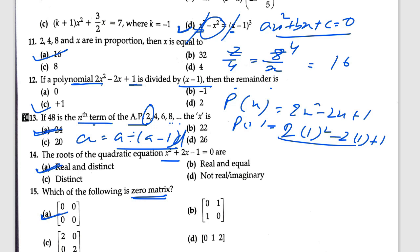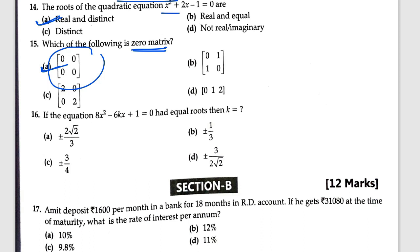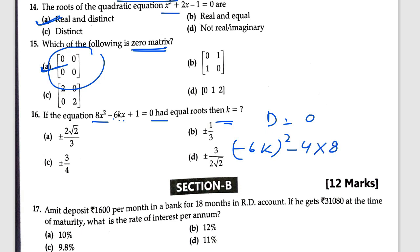Question 17: the equation AK squared plus 6KX plus 1 equals 0 — find the value of K. Setting discriminant D equals 0: B squared minus 4AC equals 0, giving minus 6K squared equals 0. Solving, the answer is plus or minus 2 root 2 over 3, which is the correct option.